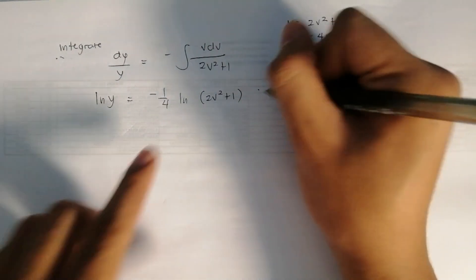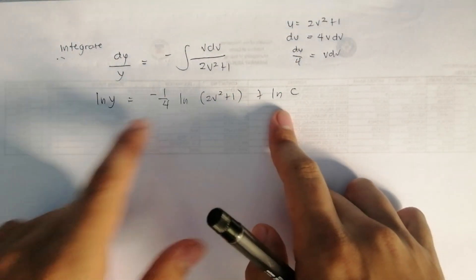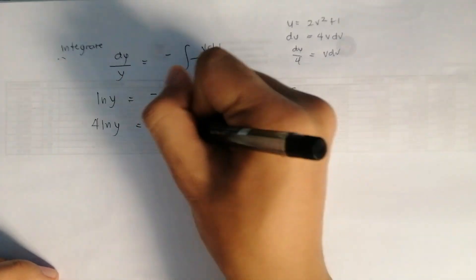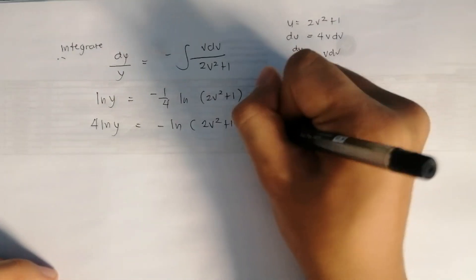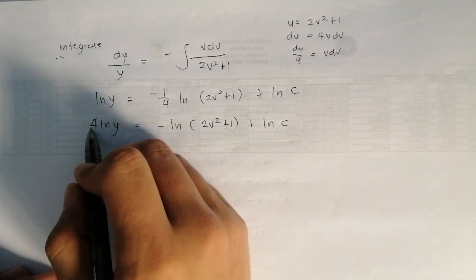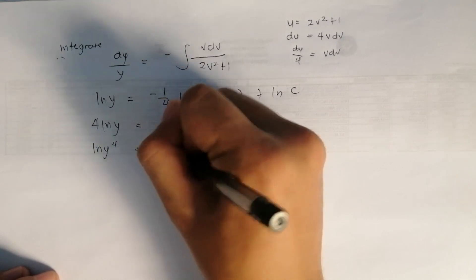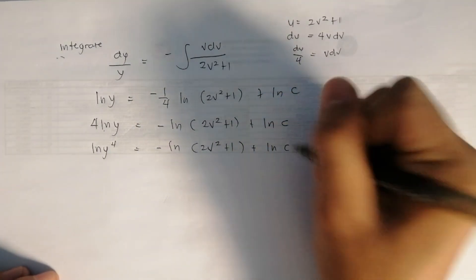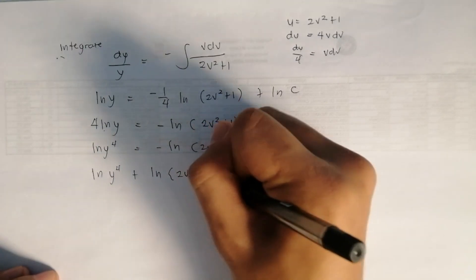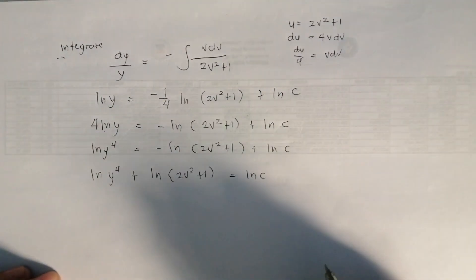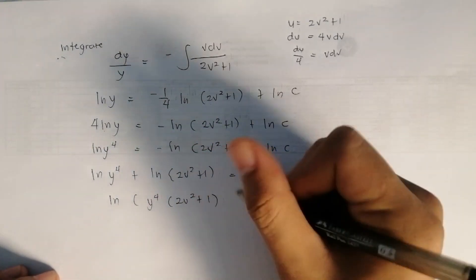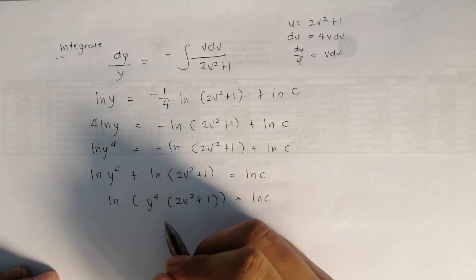Multiplying through by 4: 4 ln(y) equals negative ln(2v² plus 1) plus ln(c). Using logarithm properties, the exponent 4 moves: ln(y⁴) equals negative ln(2v² plus 1) plus ln(c). Transposing: ln(y⁴) plus ln(2v² plus 1) equals ln(c), which gives ln[y⁴(2v² plus 1)] equals ln(c).